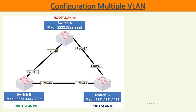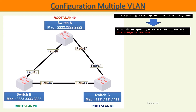We do not touch switch C or VLAN 30 since it is already elected the root bridge for its VLAN. On switch A, the command 'spanning-tree vlan 10 priority 4096' is launched. By doing a 'show spanning-tree vlan 10', we can see that it is now elected the root bridge.